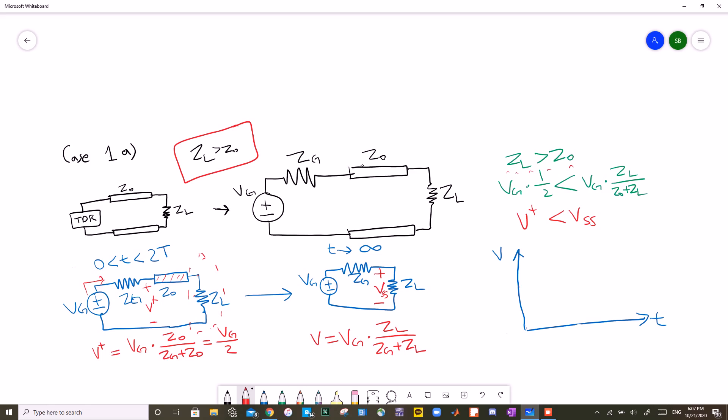So when we're drawing our graph, we'll first start off with VG over 2. And at 2T, it will jump up to VG times ZL over Z0 plus ZL. And that is it. That's the graph for the case 1A.